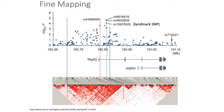One of the problems we haven't really talked about yet is fine mapping. Suppose we identify a variant we think is associated with a complex trait or disease, and we're fairly sure it's not due to some confounding factor. The problem is that even once we find an association, those SNPs are unlikely to be the so-called causal SNP, because due to linkage disequilibrium, SNPs are not inherited independently. Typically, a set of variants will be inherited together by children.